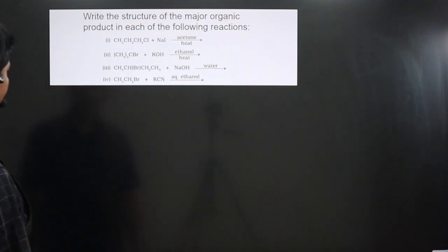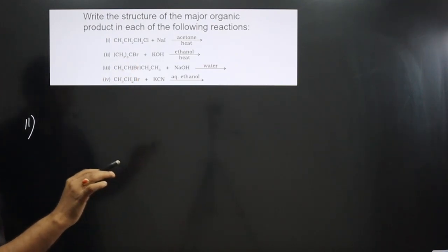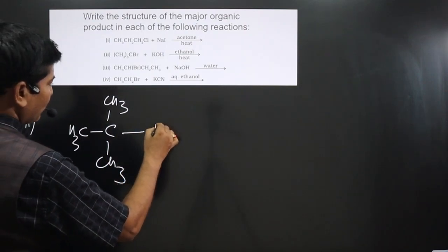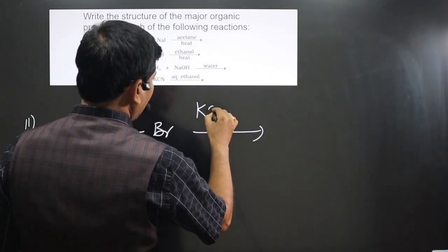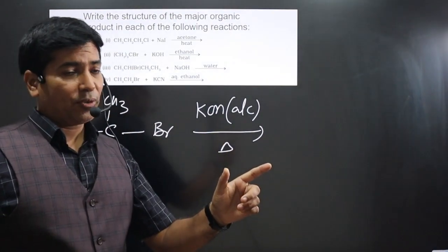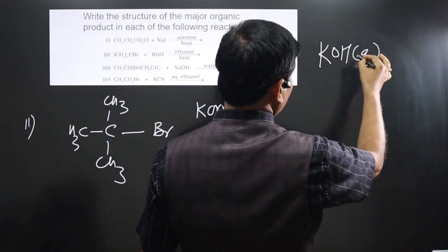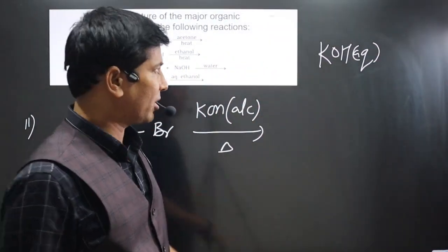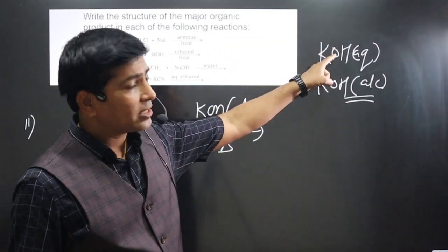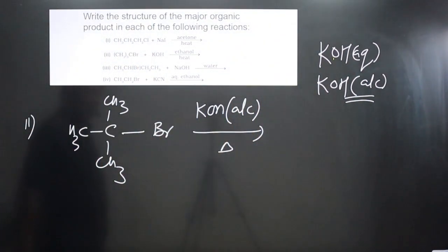In the next reaction we have (CH₃)₃CBr — a tertiary carbon with Br attached. We draw the structure: three CH₃ groups on a central carbon with Br. The reagent is KOH alcoholic with heating. Keep in mind: aqueous KOH causes nucleophilic substitution, while alcoholic KOH causes elimination reaction.